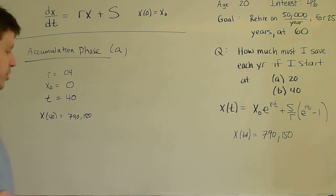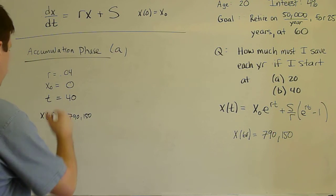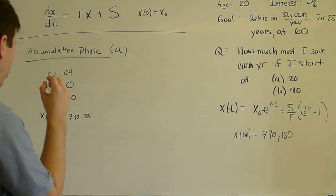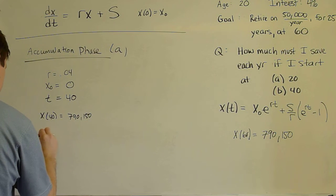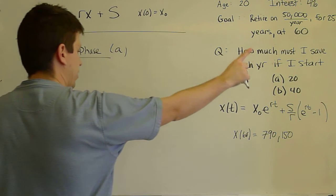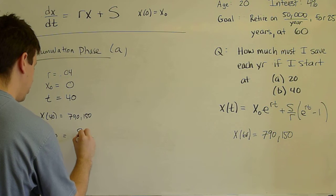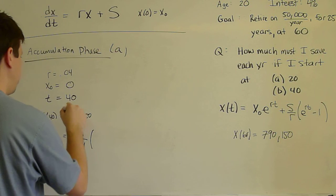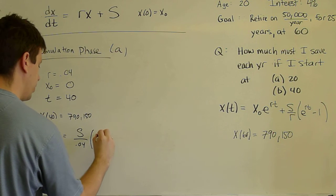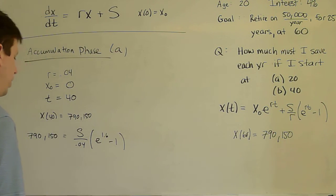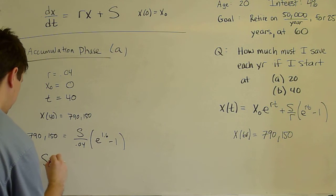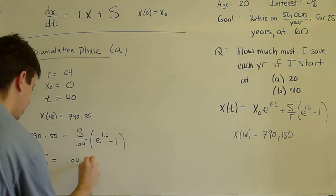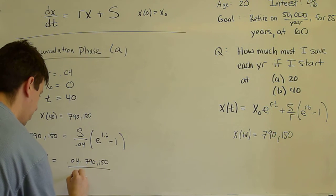And the goal is for X(40) to equal 790,150. So we need to now solve for S that meets these goals with these constants. So we plug in 790,150 equals, remember X₀ is now 0. So that's easy. S is our unknown. 0.04 is our interest rate. r*T is going to be 1.6 - 1. And so S is 0.04 times 790,150 divided by (e^1.6 - 1).